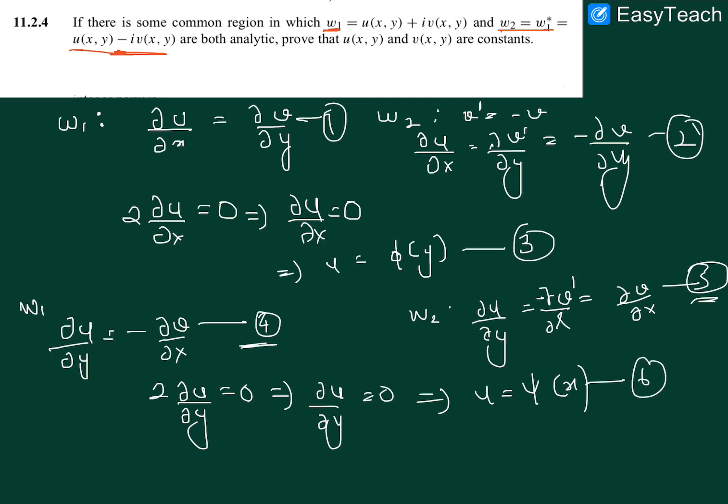Now this is equation 6. From 3 and 6, we can see that in 3, u is only function of y, and that is possible only when u is a constant. It does not depend on x and y, so u of x y does not actually depend on x or y, so it is just a constant.